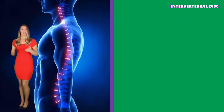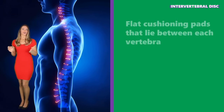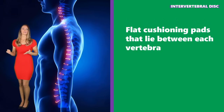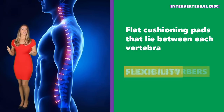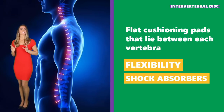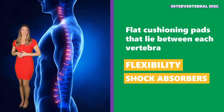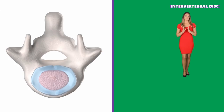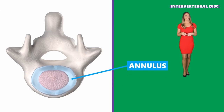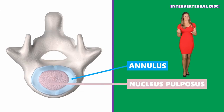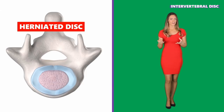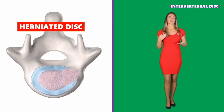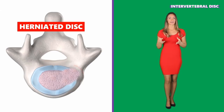Intervertebral discs are flat, cushioning pads that lie between each vertebrae. They allow for flexibility and act as shock absorbers for motion. The intervertebral disc is made up of a tough outer layer called the annulus and a soft center called the nucleus pulposus. A herniated disc means that the intervertebral disc broke and that the center — the nucleus pulposus — seeped through the annulus.